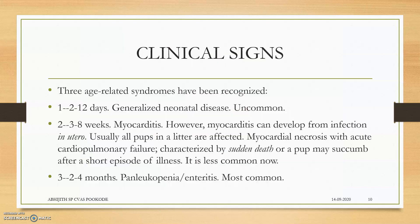There are three types of clinical syndromes, age-related. The first is for two to twelve days of age — a generalized neonatal disease, which is uncommon. When pups are three to eight weeks old, myocarditis will be present. Myocarditis can also develop from infection in utero — that is, when the pup is in its mother's womb and the mother gets infected, she can transmit the virus through the placenta to the neonate, and the neonate can develop myocardial necrosis.